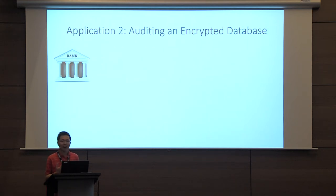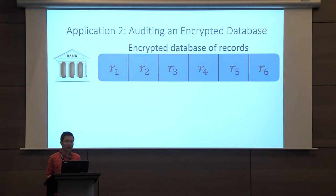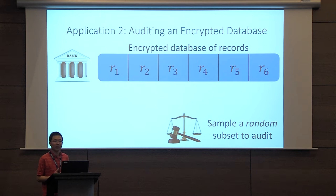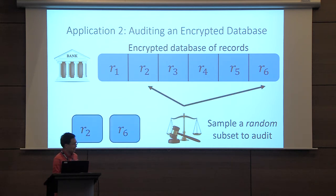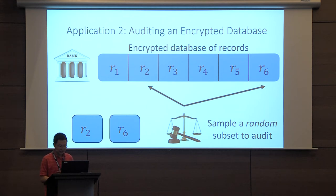A second example is a bank encrypting records that need to be audited by a third-party auditor. The auditor samples a subset of records and checks their integrity. For the audit to be meaningful, the auditor must receive a genuinely random sample rather than one that could be fixed or maliciously influenced by the bank. This naturally motivates thinking about functional encryption schemes for randomized functionalities.